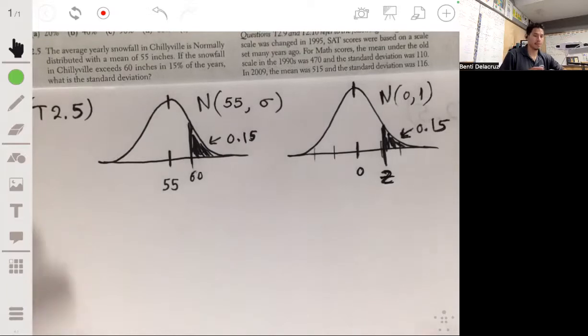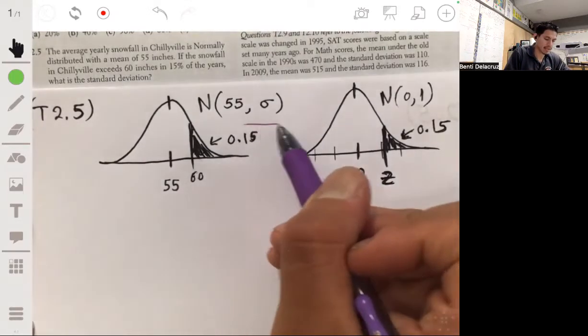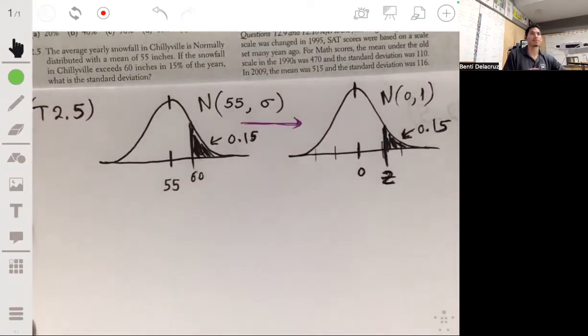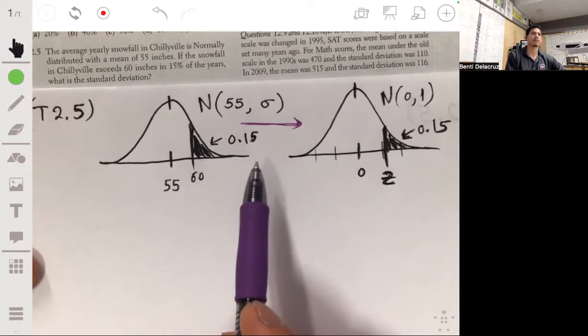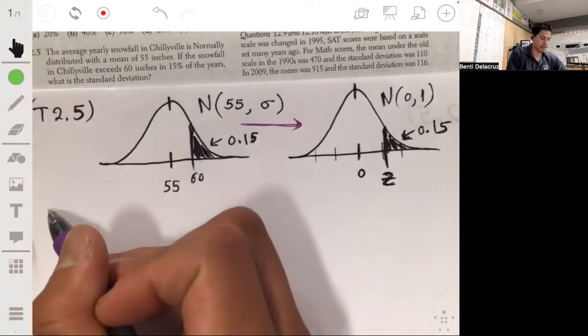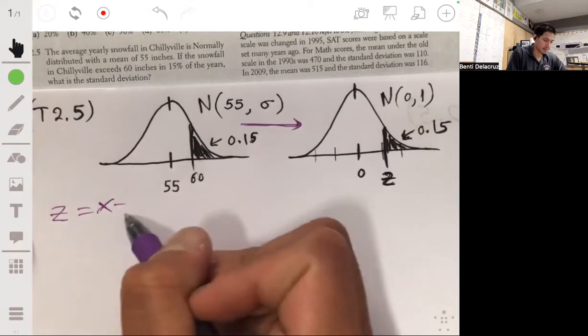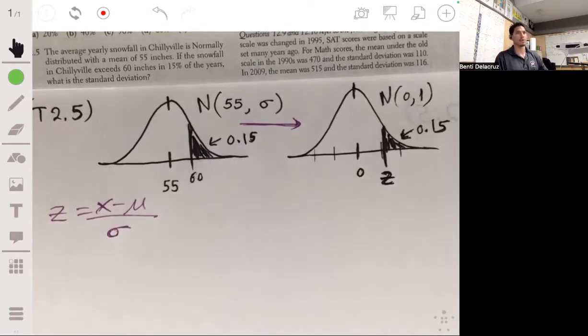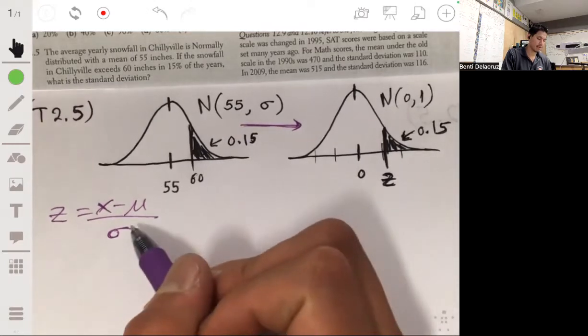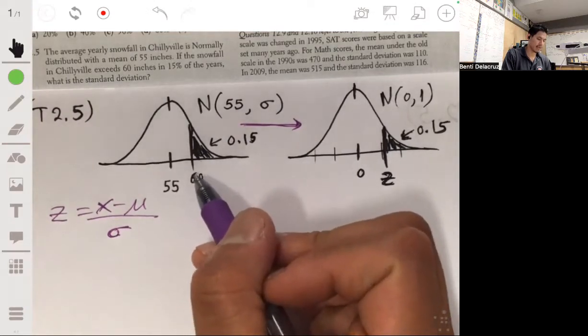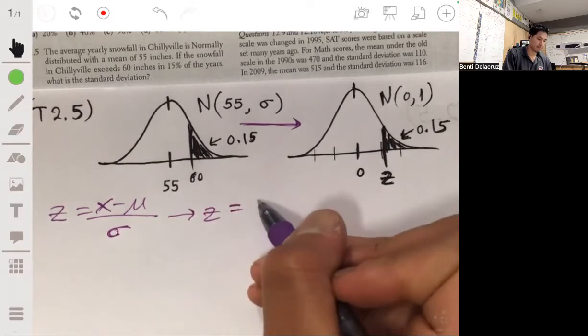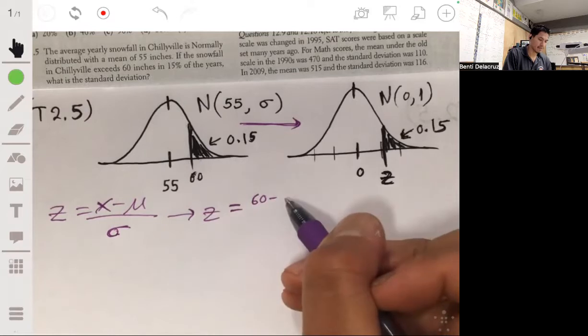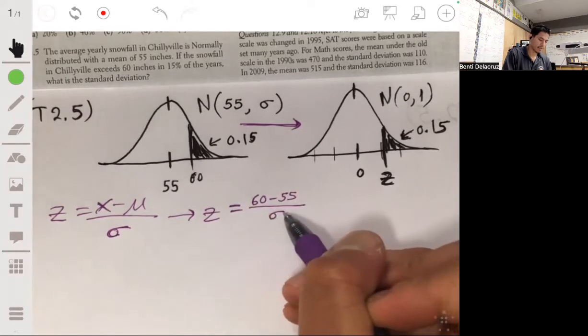The reason is when you're standardizing a value or changing one value from this distribution to the standard normal distribution, you're applying what's called a linear transformation. So you have this equation for z where z equals x minus the mean over the standard deviation. Here the mean is 55, we don't know the standard deviation, and our x-value is 60. So z will equal 60 minus 55 over sigma.